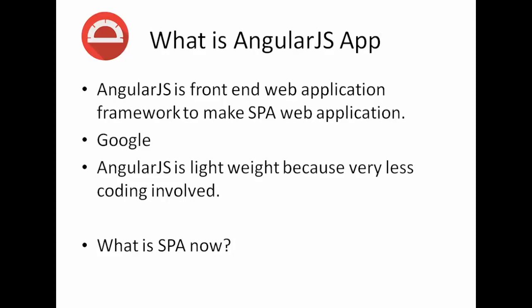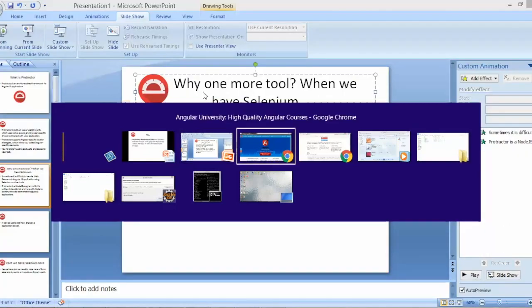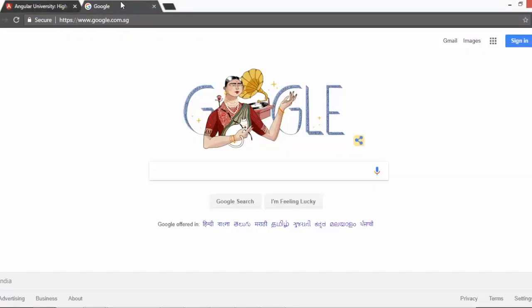We discussed one term called SPA - AngularJS is mainly used for SPA web applications. SPA stands for Single Page Applications. These are normal web applications but the main difference is that the page loads only once, and based on user activity it keeps updating without refreshing. You get a form loaded once, then as you do activity it keeps updating on the backend without refreshing your application.